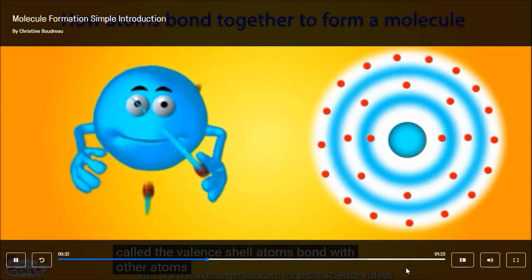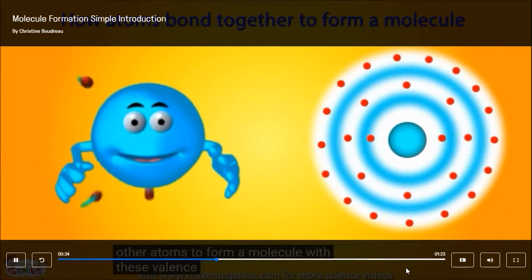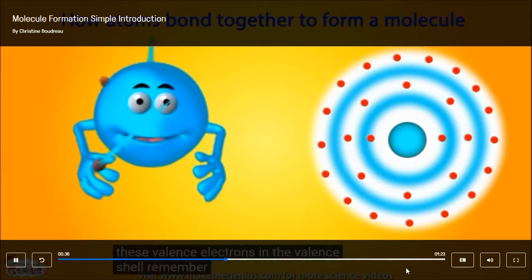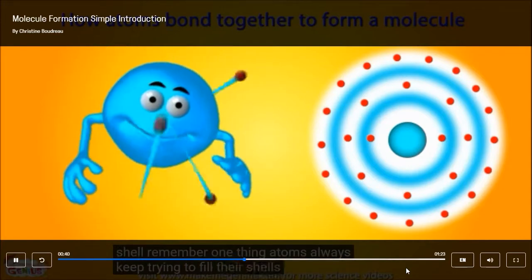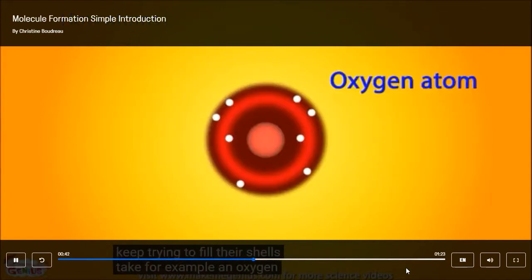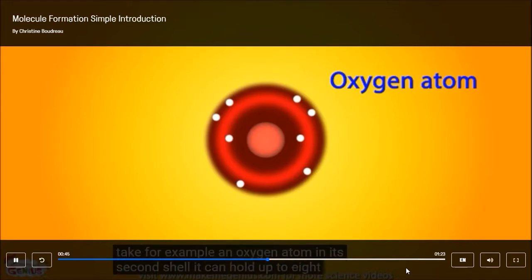Atoms bond with other atoms to form a molecule with these valence electrons in the valence shell. Remember, atoms always keep trying to fill their shells. Take, for example, an oxygen atom. In its second shell, it can hold up to eight electrons, but the oxygen atom only has six electrons in its second shell. So it is always looking for more electrons to fill its shell.